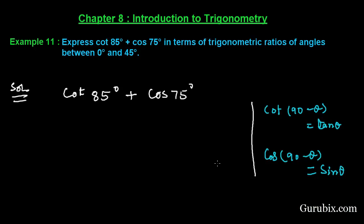So we shall apply these two formulas here in the question. First of all, we shall write this cot 85° in terms of 90° minus θ. Then we have cot(90° - 5°).